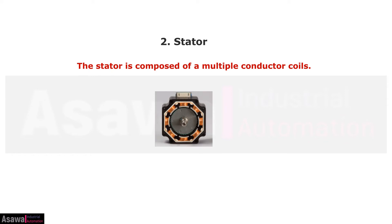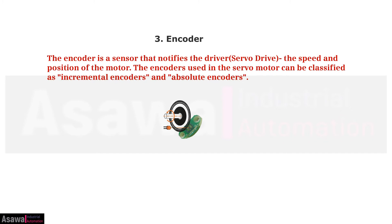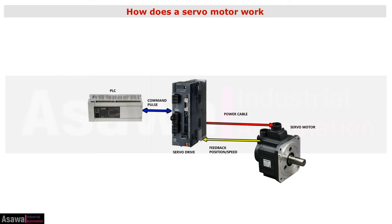The rotor of the servo motor has a powerful permanent magnet. The stator is composed of multiple conductor coils. The encoder is a sensor that notifies the servo drive of the speed and position of the motor. The encoders used in servo motors can be classified as incremental encoders and absolute encoders.